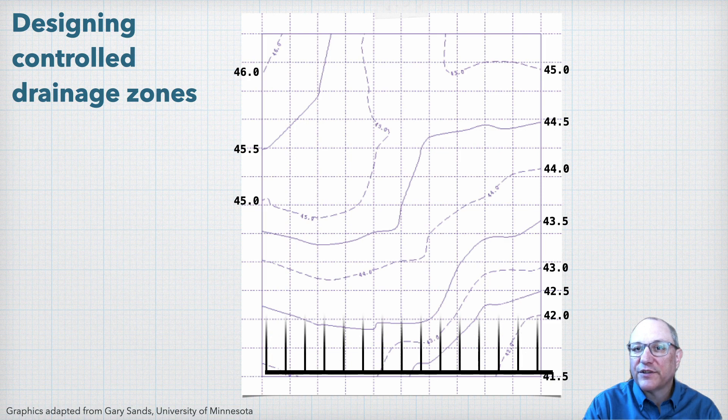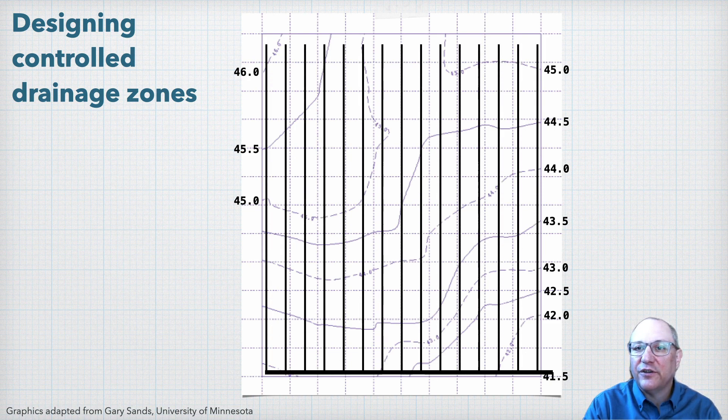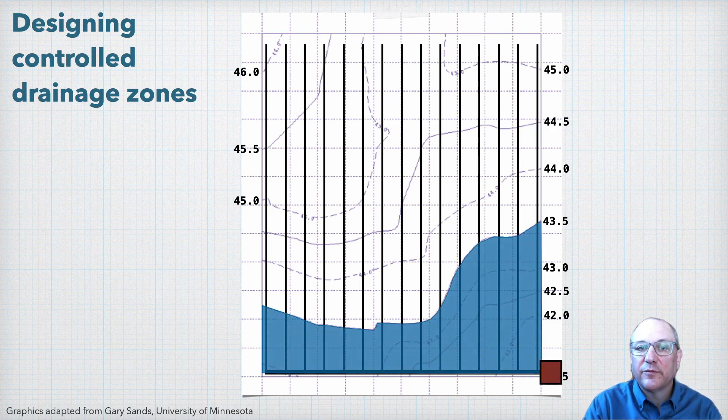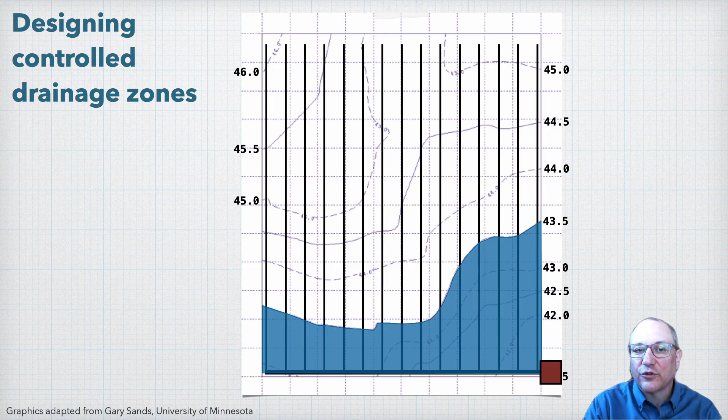If we were to do a common design with a main at the bottom of the field and laterals running up the slope, it might look something like this. If we put a control structure at the outlet to do controlled drainage, we'd have a control zone like this using a two-foot zone elevation interval. But then with this layout, we'd have no good opportunity to add another control structure if we wanted to create another zone.